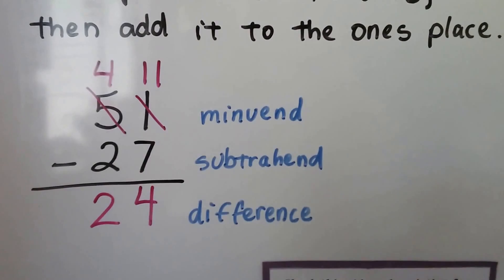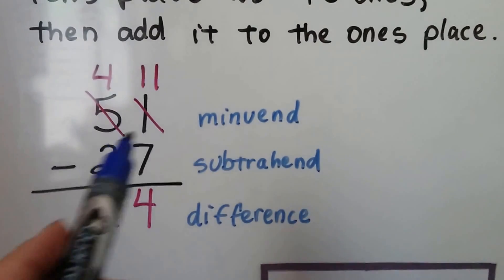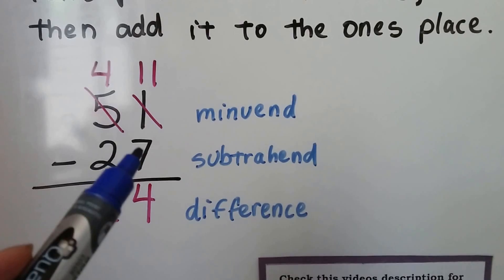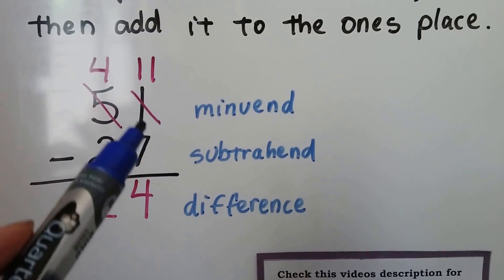If we have 51 minus 27, 51 is our minuend, 27 is our subtrahend. We see that this 7 is larger than the 1.